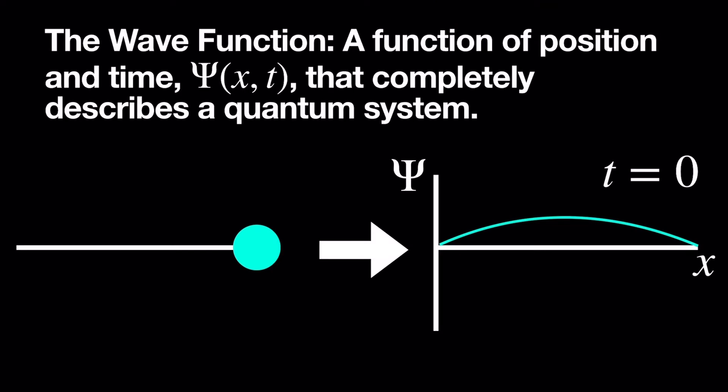The wave function is a function of position and time, and it completely describes a quantum system. That is to say, it captures all the information of anything you're doing. If you're looking at an electron in one dimension, there's a wave function to describe its movement over time.